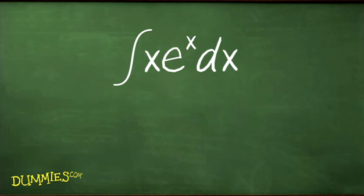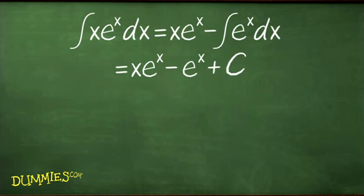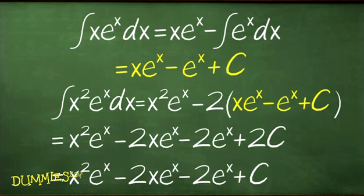Integrate by parts again. Take the result and substitute it for the integral of x times e to the x power times dx in the answer, and it produces the whole enchilada.